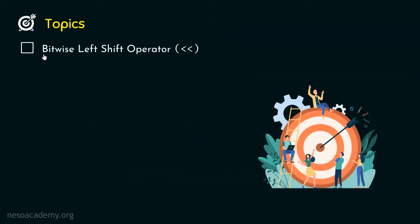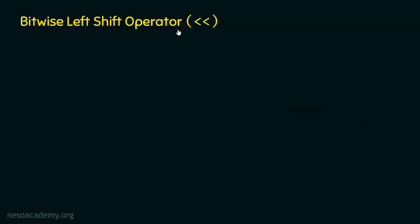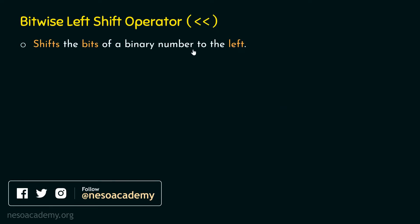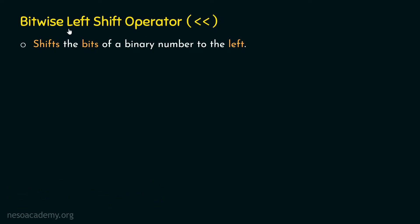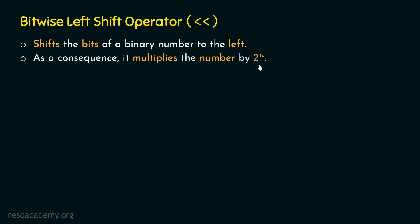The topic of this presentation is the bitwise left shift operator. The bitwise left shift operator shifts the bits of a binary number to the left — towards left, not right. As the name itself indicates, it shifts the bits towards left. As a consequence, it multiplies the number by 2 to the power n, where n represents the magnitude of shift.